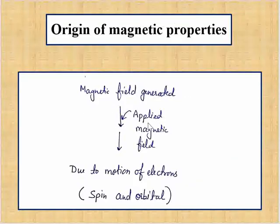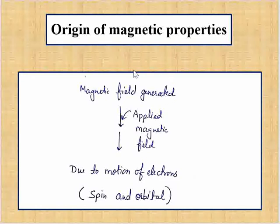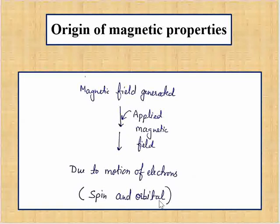First, we will discuss how magnetic properties in a substance are generated. A magnetic field can be generated due to the motion of electrons. This motion of electrons occurs in two ways: one is spin motion and the other is orbital motion. Both spin and orbital motion generate a magnetic field.